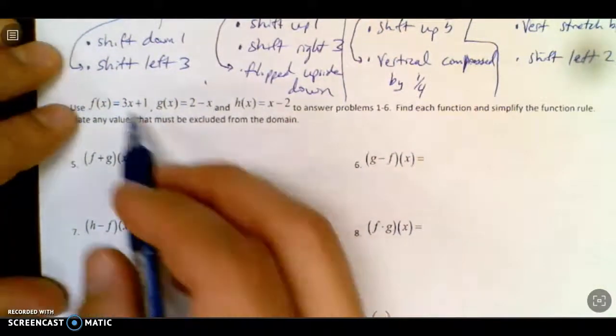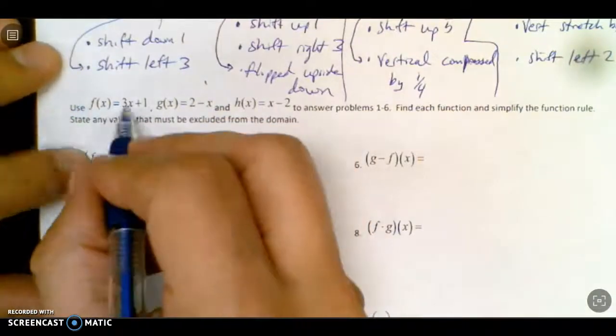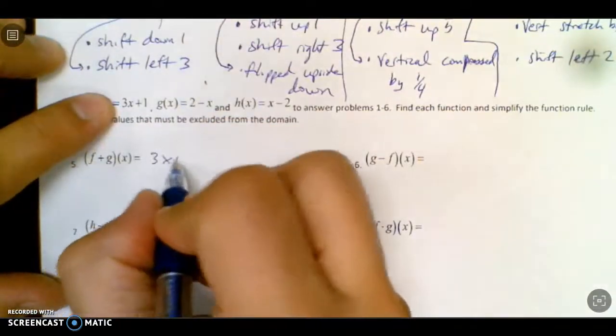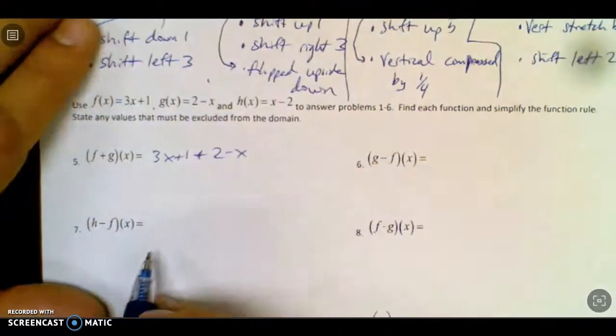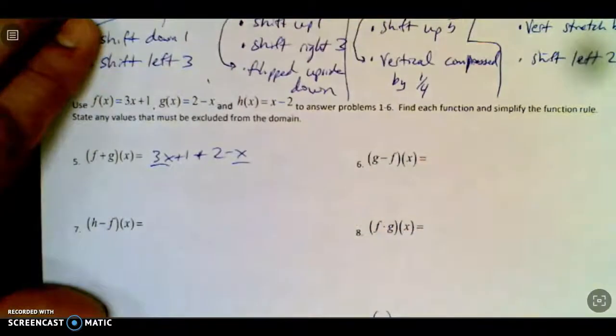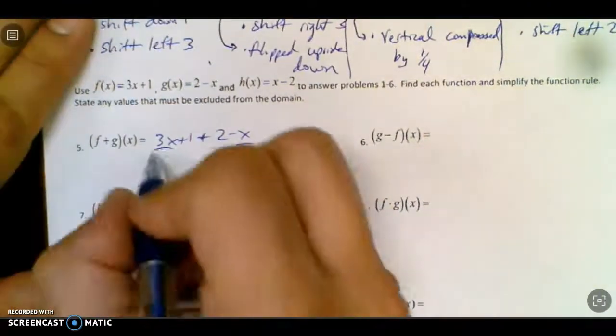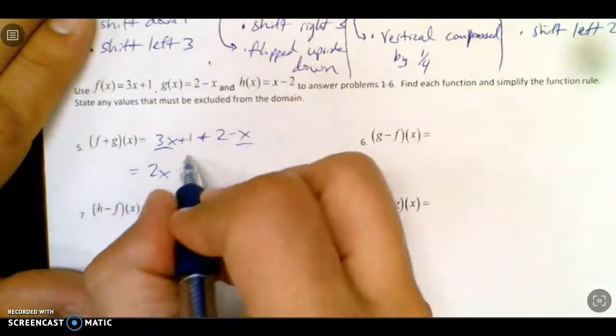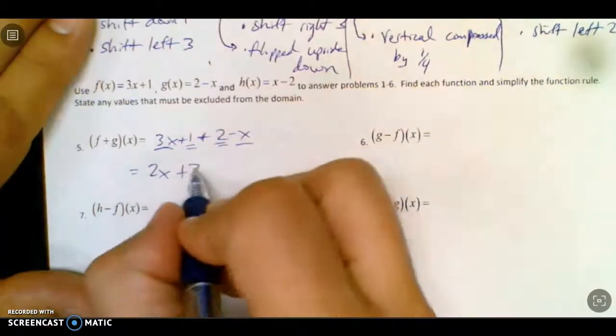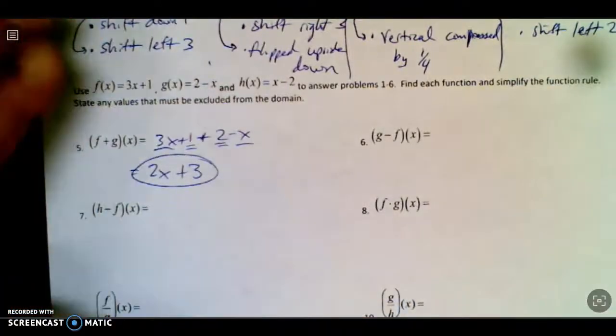Now we're getting into adding and subtracting. Adding is pretty easy. You just take 3x plus 1 plus 2 minus x. Don't really have to worry about parentheses. All I have to worry about is combining like terms. So I've got 3x minus x is 2x, and plus, and we've got these. Just make sure you don't miss anything.